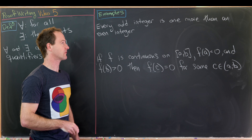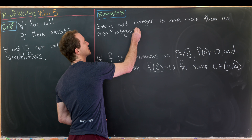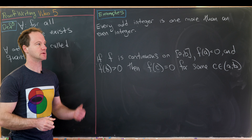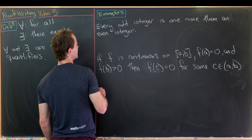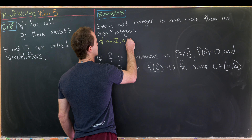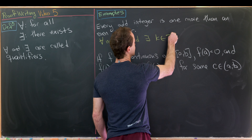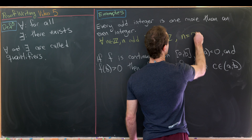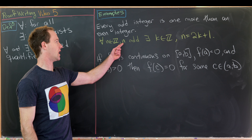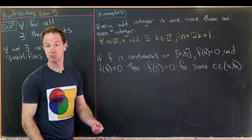The next example says: every odd integer is one more than an even integer. The truth or falsehood is not our goal; our goal is to rewrite it in symbols. Something like this works: for all n in ℤ where n is odd, there exists a k in ℤ such that n = 2k + 1. We've got an odd integer that is one more than an even integer.